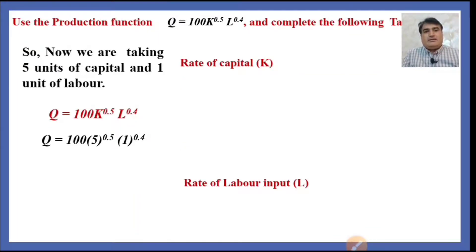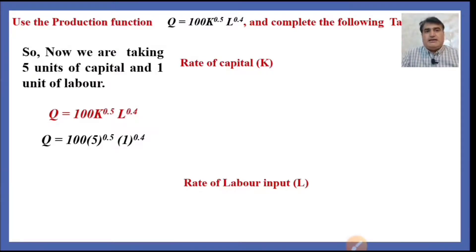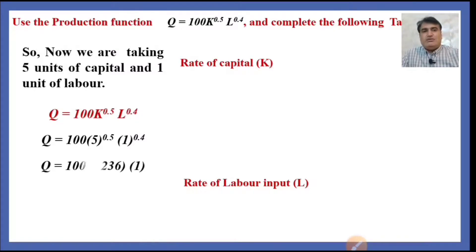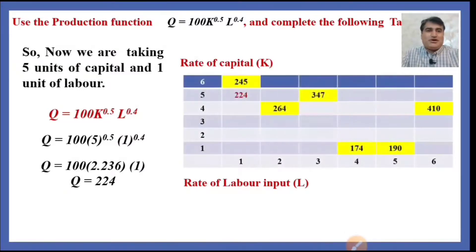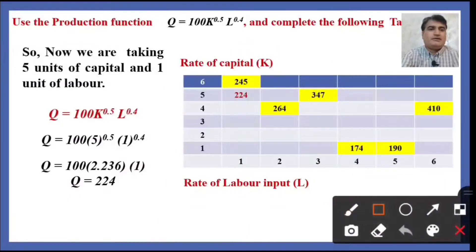Now we are taking 5 units of capital and 1 unit of labor and using the same production function — how much output will the producer get? We plug in 5 for capital and 1 for labor, and by solving it we get 224 units of output. You can see here that we have filled in 224.